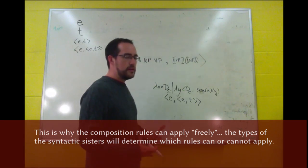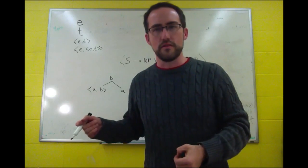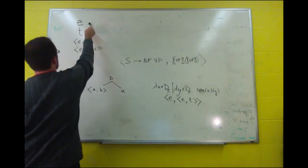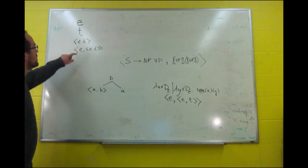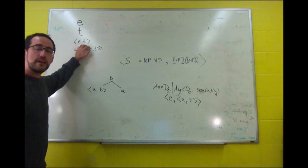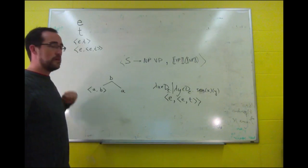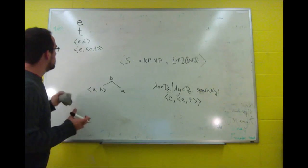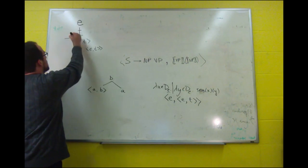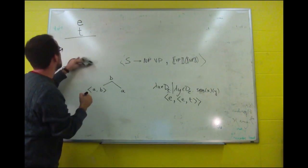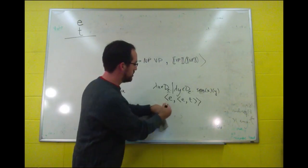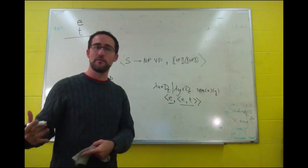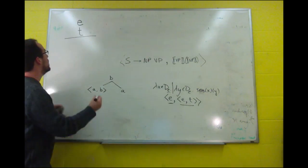One of the things we can determine about types is that any time you have a function of type AB and its sister of type A, then the mother will be of type B. Instead of having all these different rules, any time you have this kind of structure, functional application applies. We'll be able to make that kind of determination for the other rules as well. We have the type of individuals, type for truth values, the type of nouns and intransitive verbs which take an entity and tell you true or false depending on whether it has that property, and the type of transitive verbs. We can generalize over that.